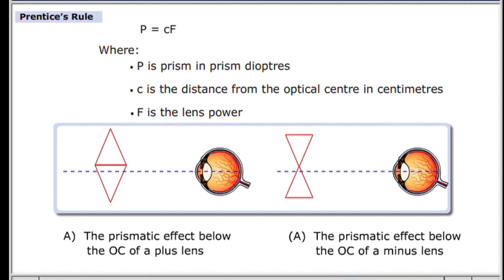Suppose we now wish to calculate the prismatic effect at 0.4 mm below the optical center of a minus 4 spherical lens. Then P = CF = 0.4 × 4 = 1.6 prism diopters base up. A diagram similar to diagram B in the slide, where the minus lens is represented as two prisms apex to apex, can assist in determining the direction — up in this case. Calculation of the prismatic effect for spherocylinder lenses is the same if the prismatic effect is required in a principal meridian.